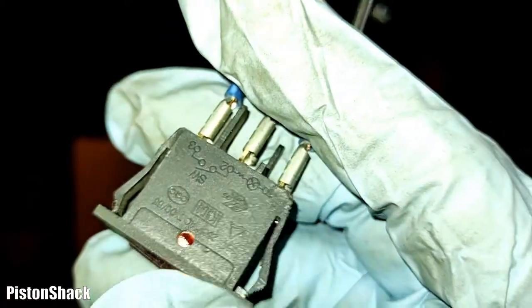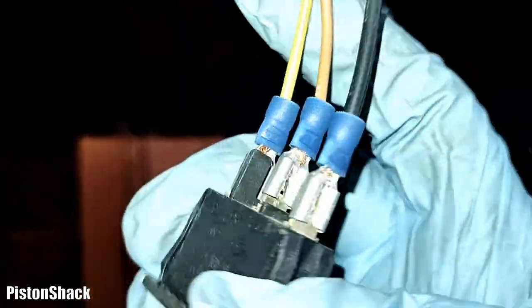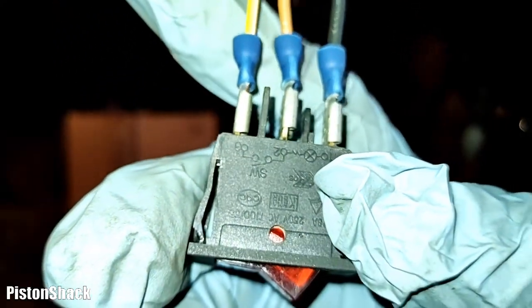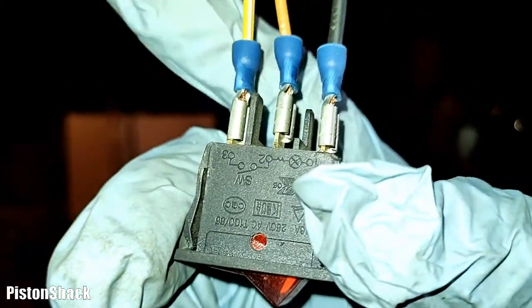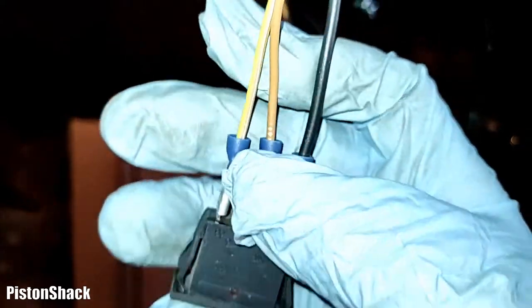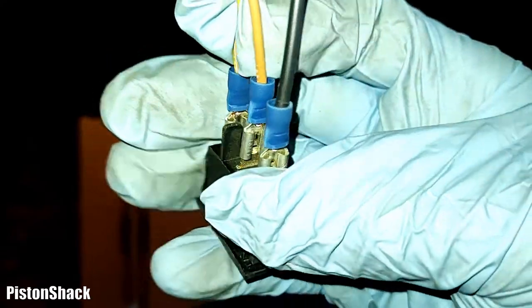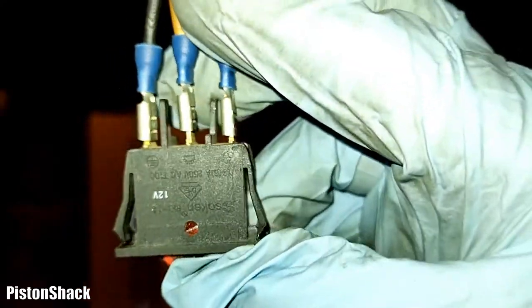The black one is your ground, the yellow one coming to this terminal is a constant power supply or switched power supply, whatever you like. To the switch, and this one is going to your accessory or control side of the relay.